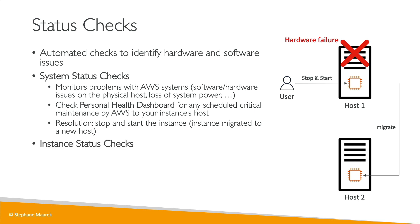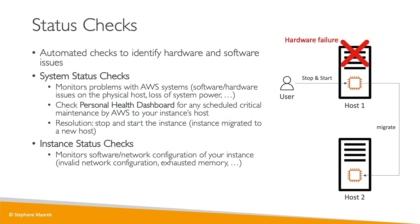The second type is an instance status check. This monitors the software and network configuration of your instance — for example, the network configuration becomes invalid, there's exhausted memory, this kind of stuff. In which case, to resolve this issue you should just reboot the EC2 instance or change the instance configuration.